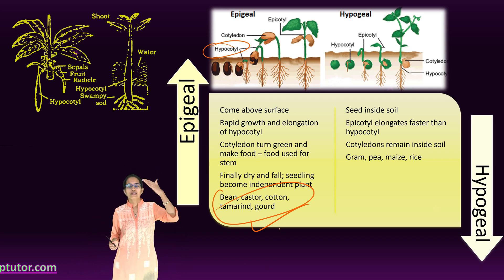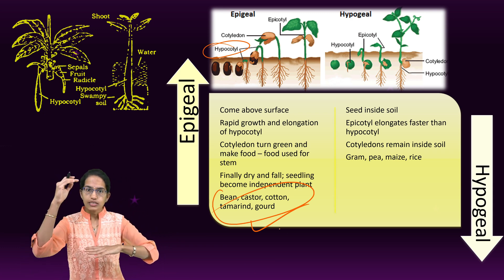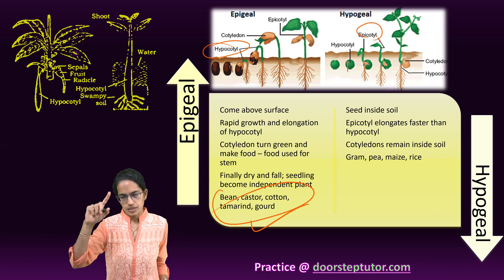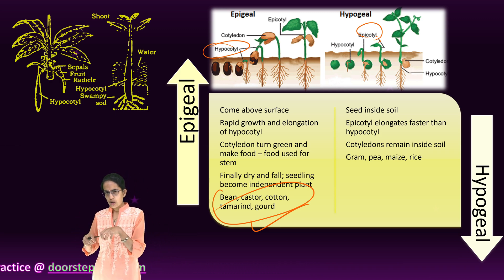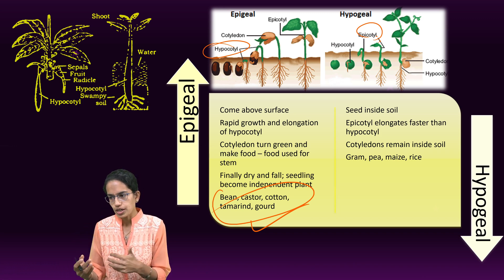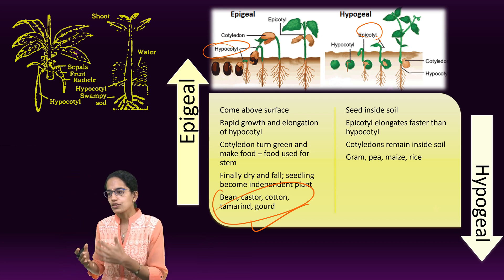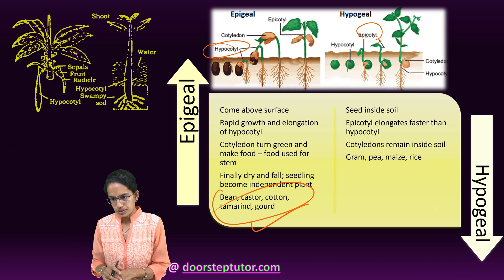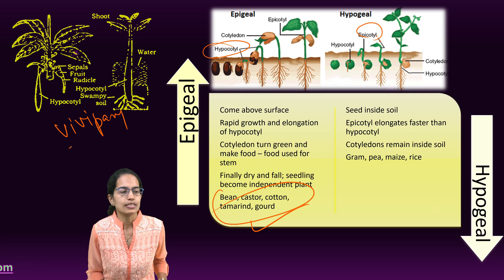However, hypogeal germination, the cotyledon remains inside the soil itself and epicotyl elongates at a faster pace than the hypocotyl. Epicotyl gives rise to the plumule and when the cotyledon is within the surface, it would convert the starch into sugar and these would be transferred to the radicle in the root and plumule in the shoot and through the piercing of the pericarp and the testa, there would be developments that would be seen.